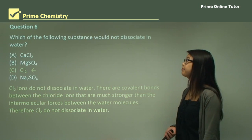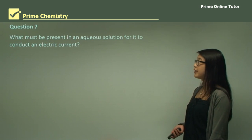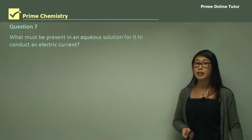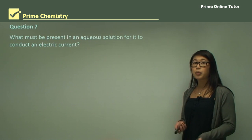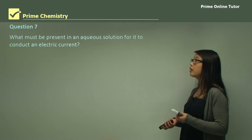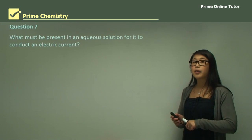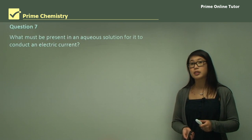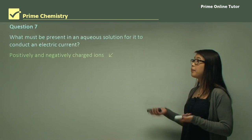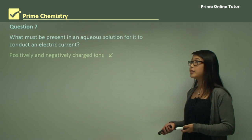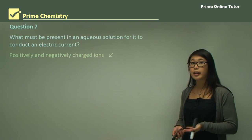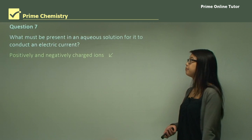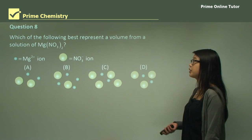Question: what must be present in an aqueous solution for it to conduct an electric current? Water alone as a solvent should not conduct electricity. We need positive and negatively charged ions — an electrolyte. The electrolyte ions can then move through the solution and create a current.